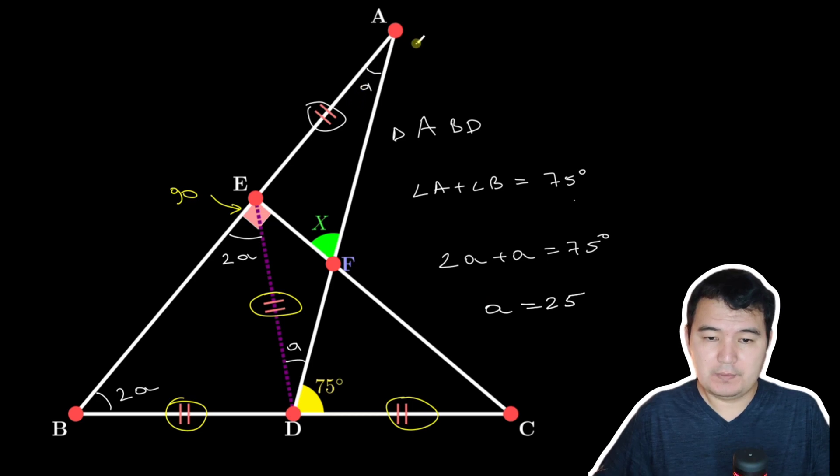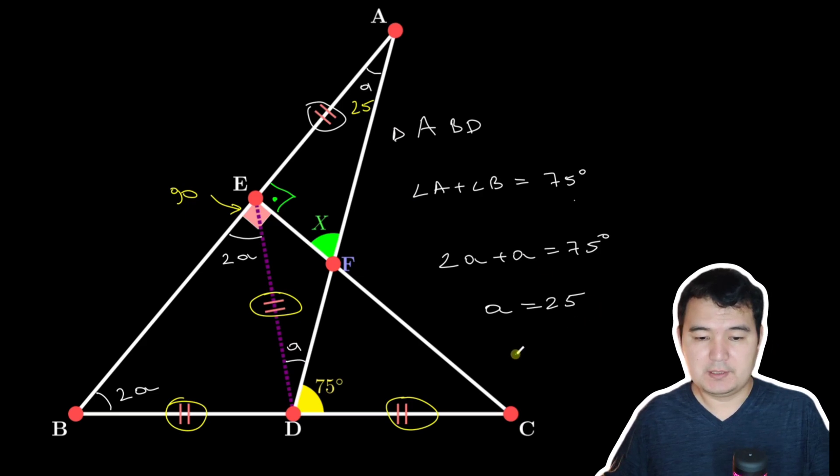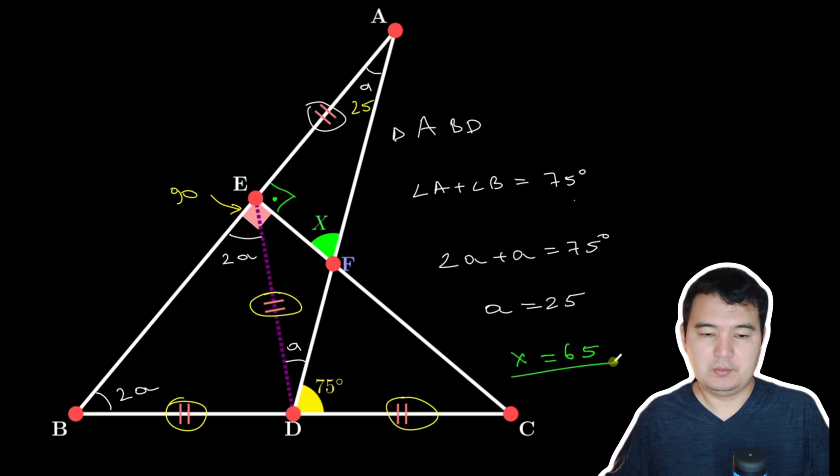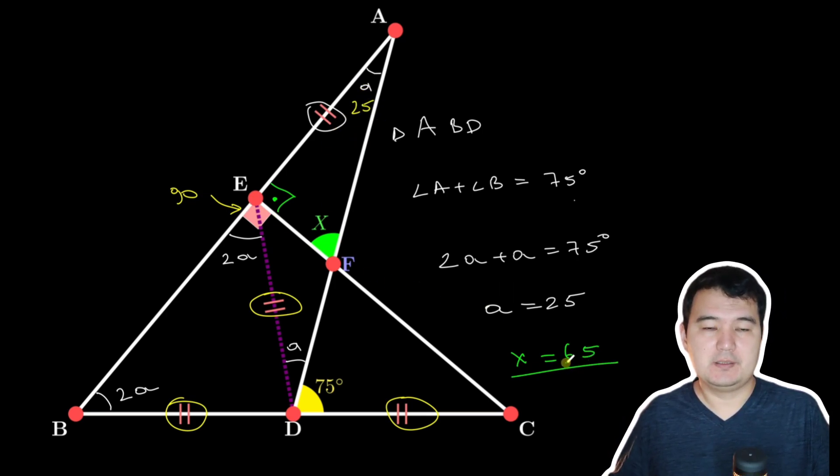If A is 25 degrees and we have 90 degrees here, that gives us X equals 65 degrees. So you can solve this small triangle to find the value of X.